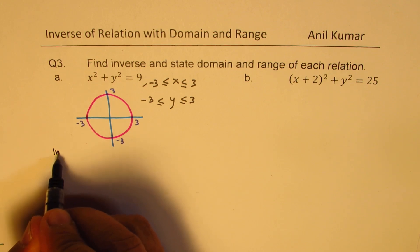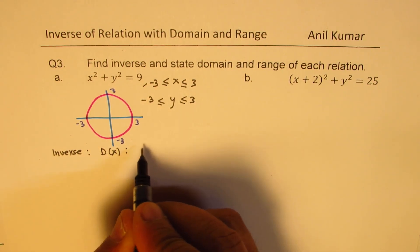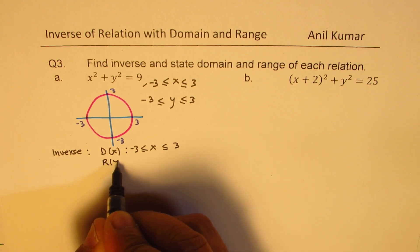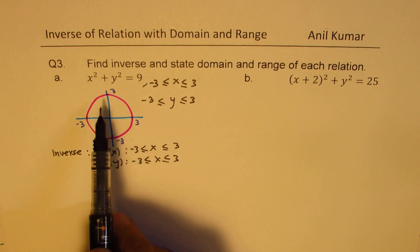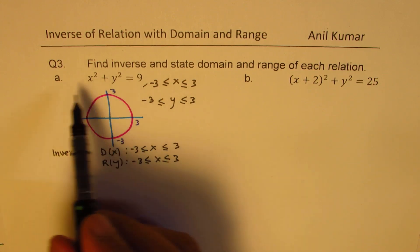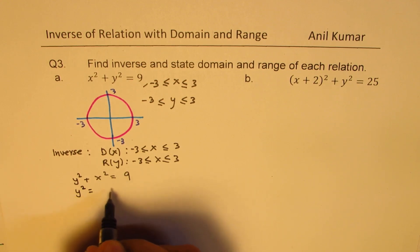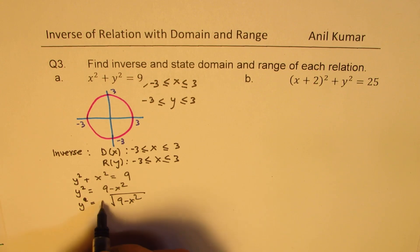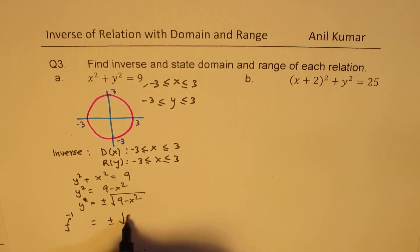Now let's find the inverse. In the case of inverse, the domain and range will flip. So the domain will be between plus and minus 3, and the range will also be between plus and minus 3. So when you swap, you get the same domain and range. To find the inverse relation, we need to isolate y after swapping x and y. So we get y squared plus x squared equals to 9, then y squared equals to 9 minus x squared, so y equals plus or minus square root of 9 minus x squared.